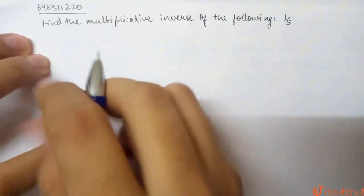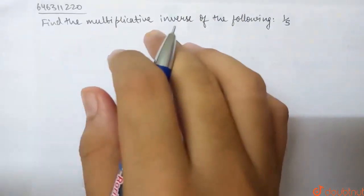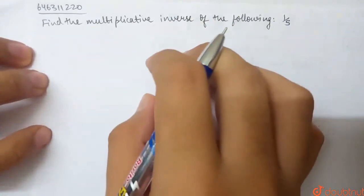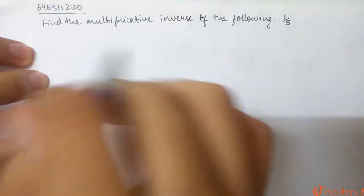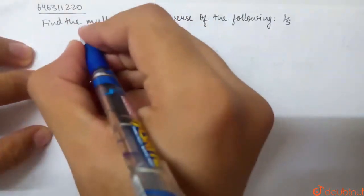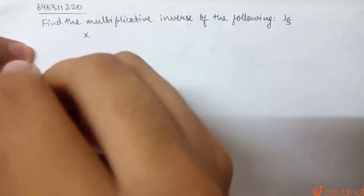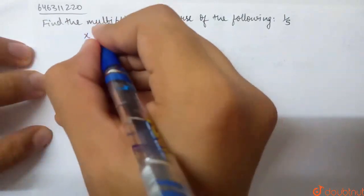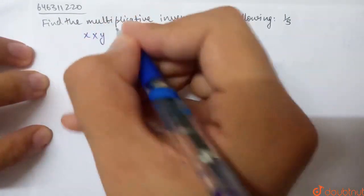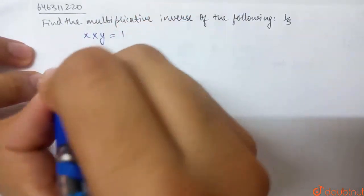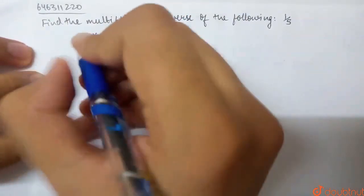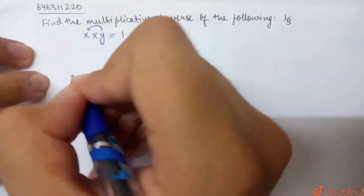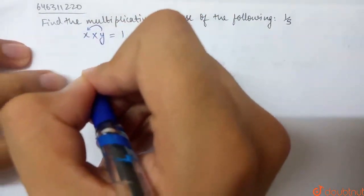This question is: Find the Multiplicative Inverse of the following. What is multiplicative inverse? If we have a number x, and we multiply it by a number y so that the product is 1, then y is the multiplicative inverse of x.